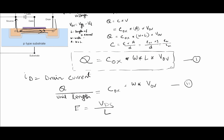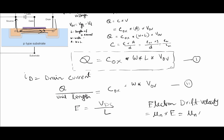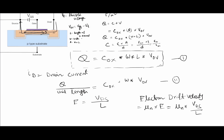The electron drift velocity is equal to μn multiplied by E, which gives drift velocity = μn × VDS / L, where μn is the mobility of the electron.